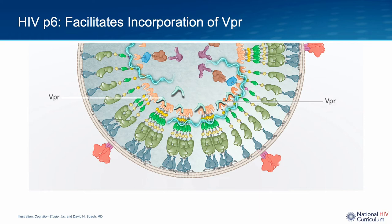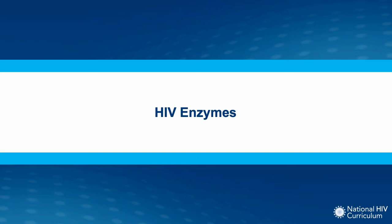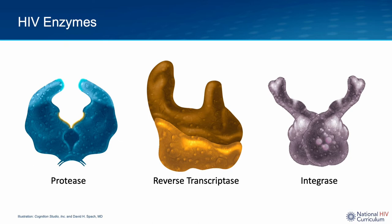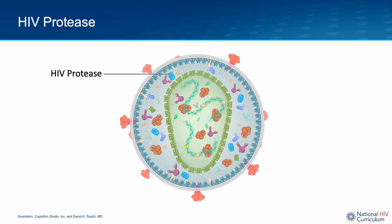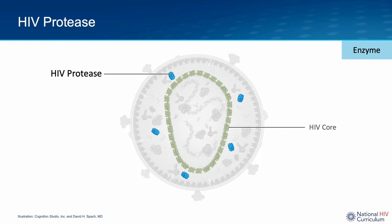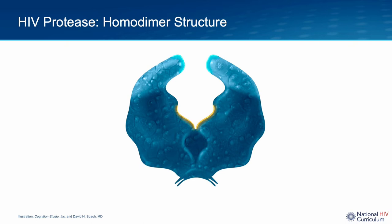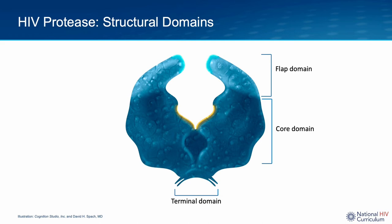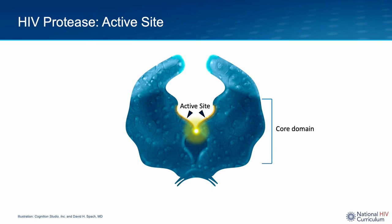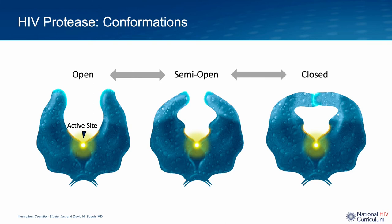Now I'd like to focus on the HIV enzymes. The three HIV enzymes are protease, reverse transcriptase, and integrase, and each plays a critical role in HIV replication. Each virion has approximately 120 HIV protease enzymes, and HIV protease is located outside the viral core. The HIV protease is a small homodimer consisting of two mirror image subunits. This enzyme has three functional regions: the flap, core, and terminal domains. The active site for this enzyme is in the center of the two core domains. The HIV protease acts like molecular scissors with the opening and closing of the flap region, which also enables the substrate to enter and leave the active site of protease.